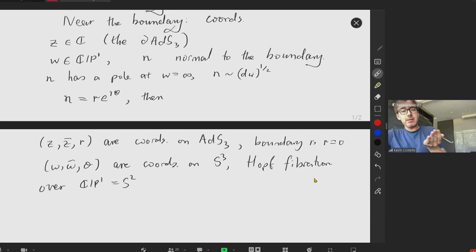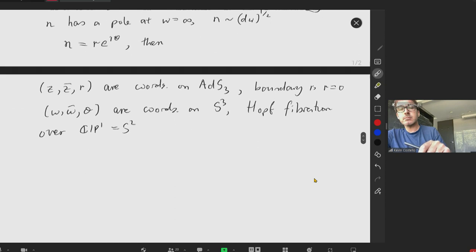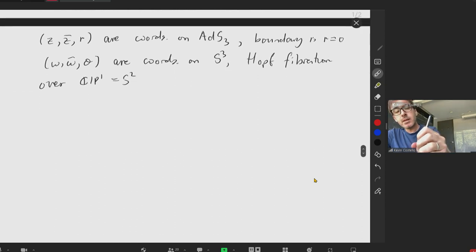So the goal is to build a chiral algebra living on the Z plane by studying the Hopf and the gravitational gauge theory we have in the book. So to get there, we'll need a few more details of the geometry.